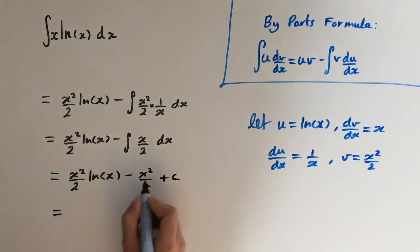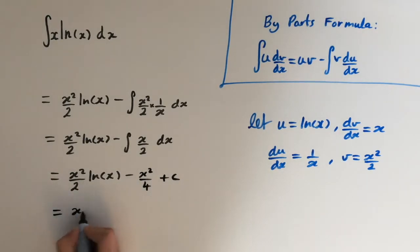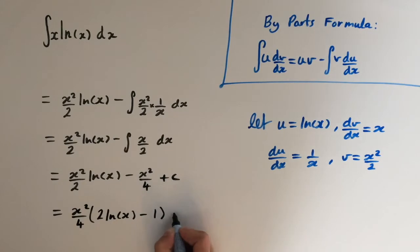And for the last step, I'm going to factor out x squared over 4. So x squared over 4 times 2 ln of x minus 1 plus c.